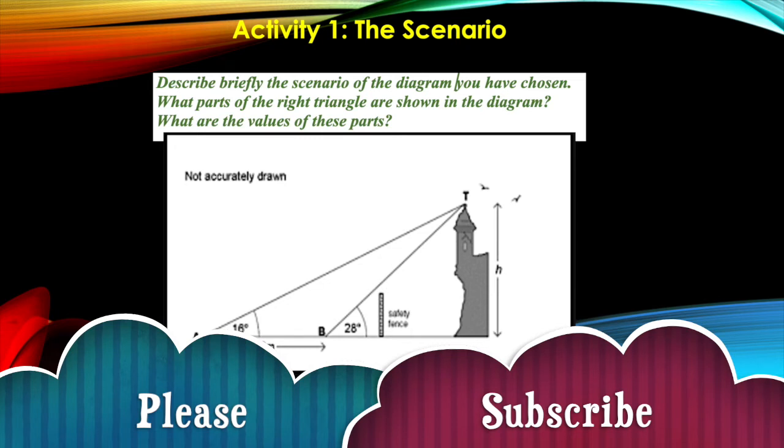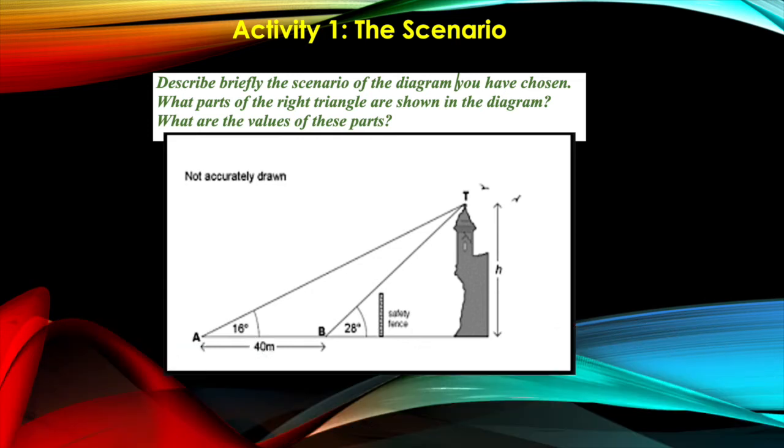The parts that are shown in the right triangles are the reference angle, part of the adjacent side, and the height of the triangle or the opposite side, which is represented by H.